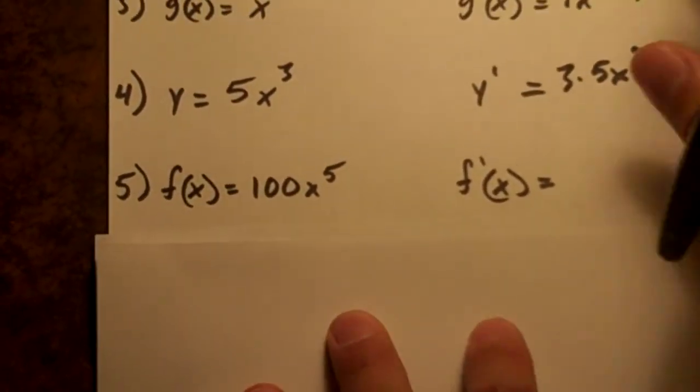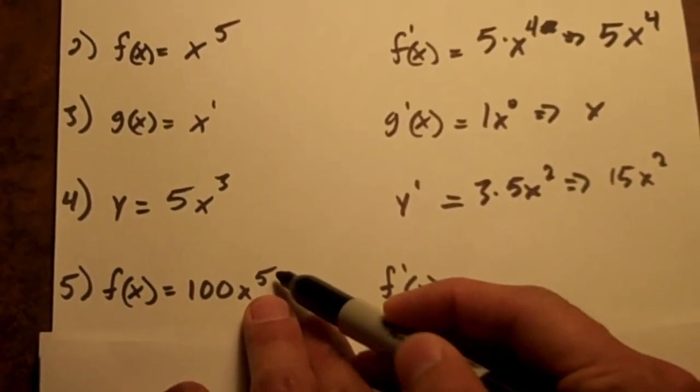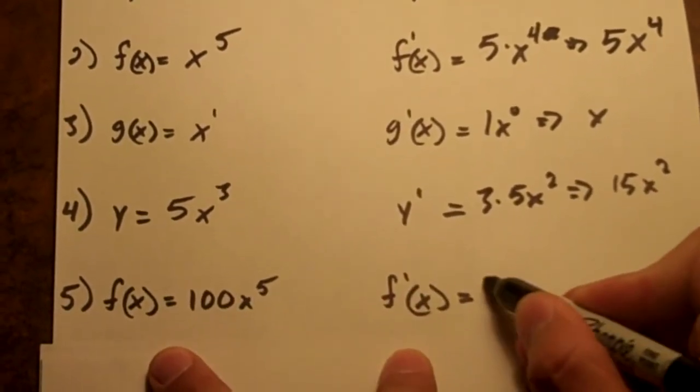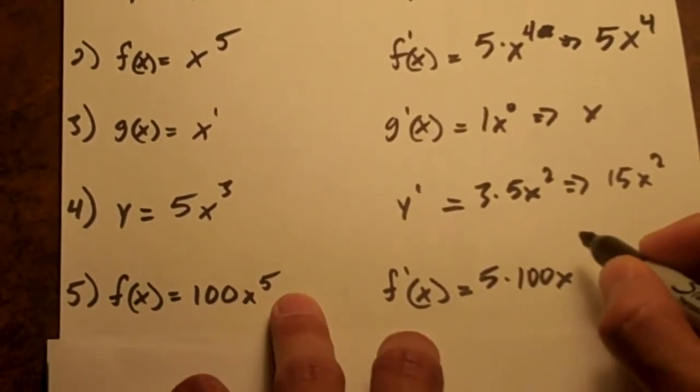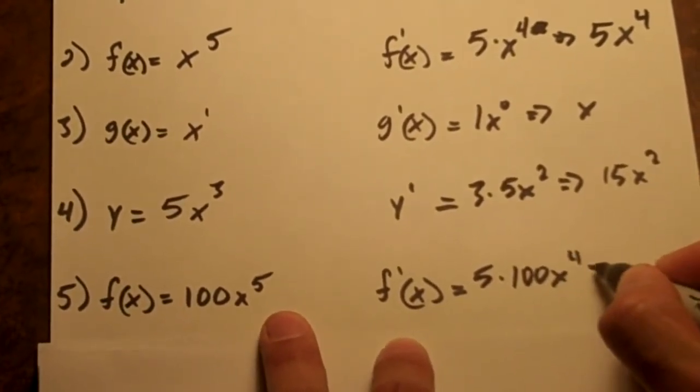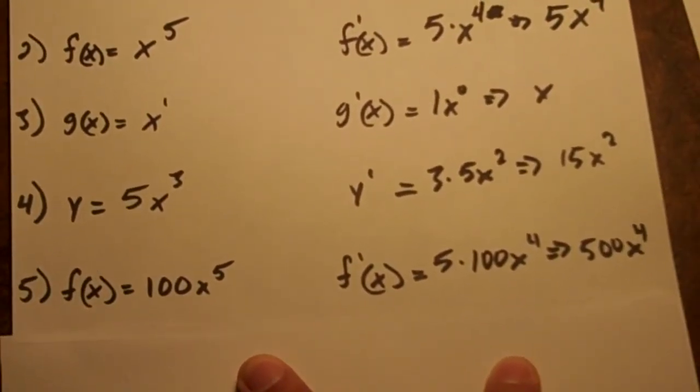A few more examples. Some crazy constants. You take this number up here and multiply it out front. 5 times 100x and then 5 minus 1 is 4. So you have 500x to the 4th.